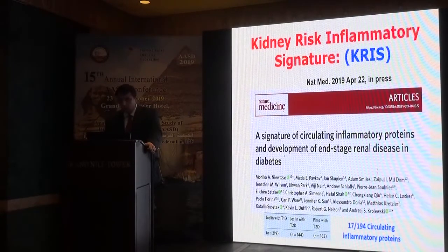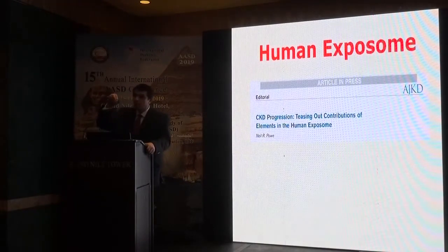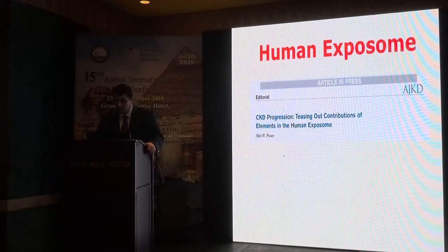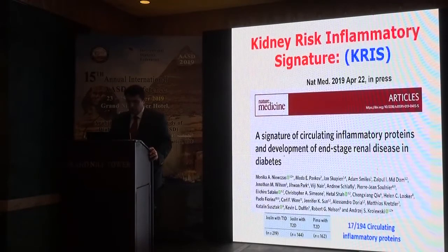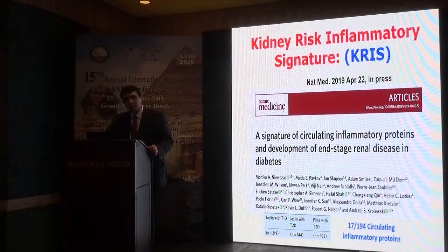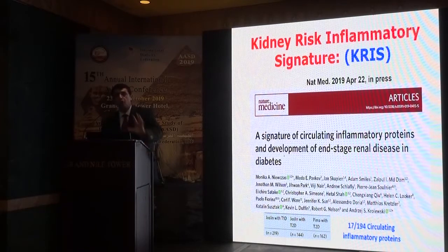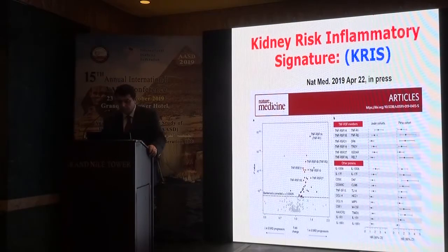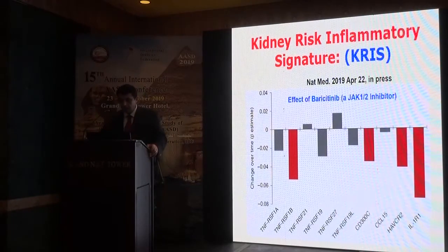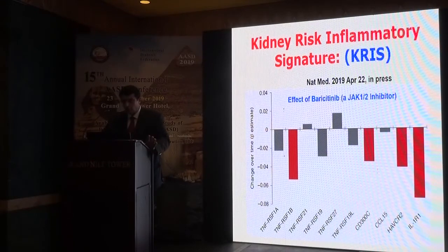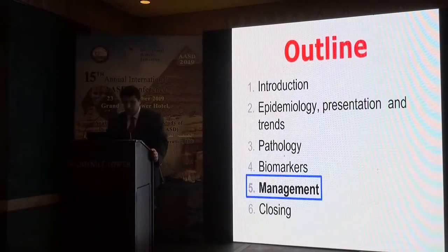Regarding the human exposome: there are environmental factors that can alter your genome, known as the exposome — exposure effects on the genome. Regarding the kidney risk inflammatory signature: we have identified about 17 from 194 circulating proteins that help assess the degree of inflammation and progression toward end-stage kidney disease, most of which are tumor necrosis factor soluble factors. It was also found that a JAK1/2 inhibitor was able to decline progression toward end-stage kidney disease.